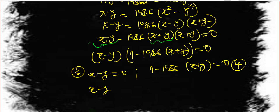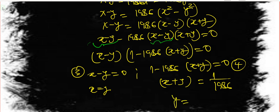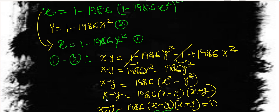From equation 3 we have x equals y. From equation 4, sending the term over, we get x plus y equals 1 over 1986. So from equation 4 we can express y equals 1 over 1986 minus x. Now let's use these to find the actual values of X.